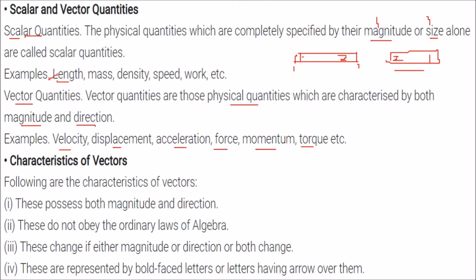What are the characteristics of a vector? First, a vector has both magnitude and direction. Vectors generally do not obey the ordinary laws of algebra. If either the magnitude or the direction — or both — change, the vector quantity changes. Vectors are represented by boldface letters or letters with an arrow over them. If we bold a letter and put an arrow over it, it becomes a vector.